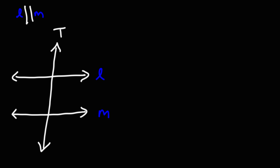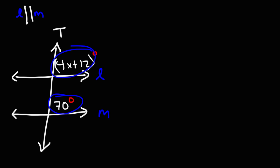Let's adjust the problem a bit. Now let's say one angle is 4X plus 12 degrees and the other angle is 70 degrees. What is the value of X? Feel free to pause the video if you want to try it. We need to know the relationship between these two angles — are we dealing with alternate interior angles, alternate exterior angles, corresponding angles, same-side interior angles, or vertical angles?